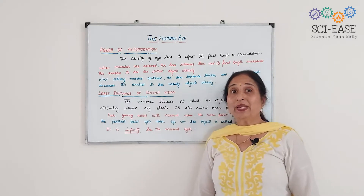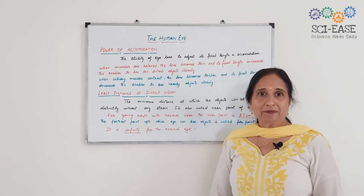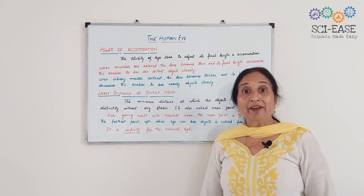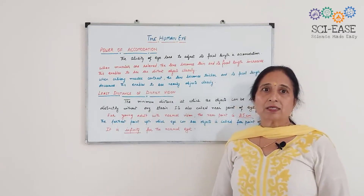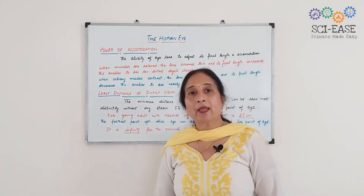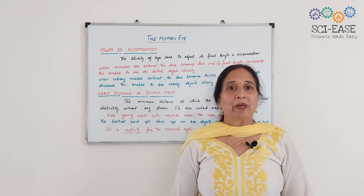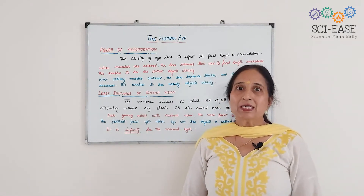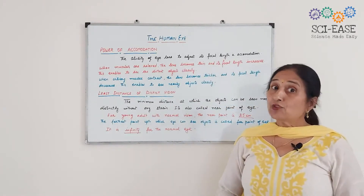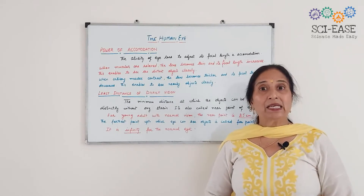I want to tell you one term: power of accommodation. This is a very important term. Sometimes only the definition is asked — what do you mean by power of accommodation? The eye lens is made up of fibrous, jelly-like material, and its focal length can be changed by the ciliary muscles.